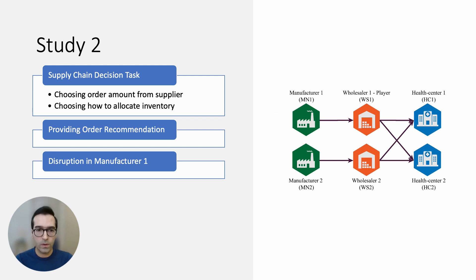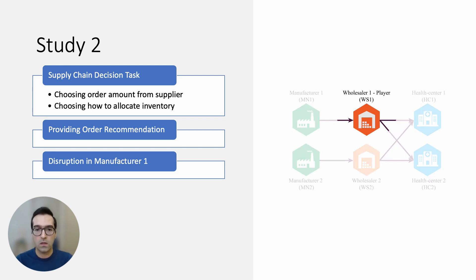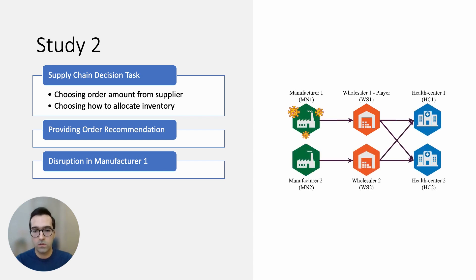In study two, players played the role of a wholesaler in a game experiment replicating a supply chain network. They were playing the role of wholesaler one, as you can see in this network. They were responsible for ordering from a supplier and then allocating their inventory to downstream health centers. They were also receiving order recommendations from the game. At some point players also experienced a supply disruption in their manufacturer.